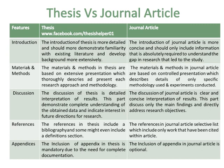The references in a thesis include a bibliography, and some might even include a definitions section, while the references in a journal article are a selective list which includes only work that has been cited within the article. The inclusion of an appendix in a thesis is mandatory due to the need for complete documentation, while the inclusion of an appendix in a journal article is optional.